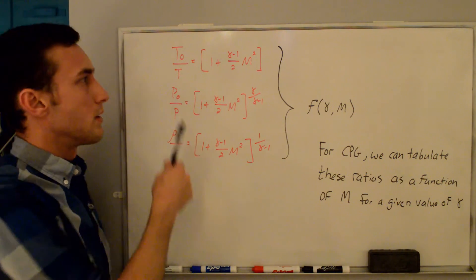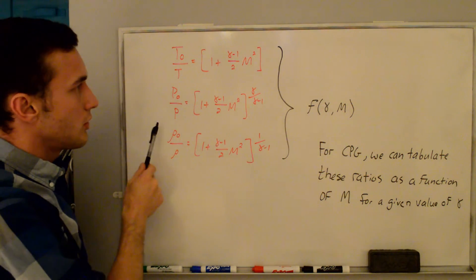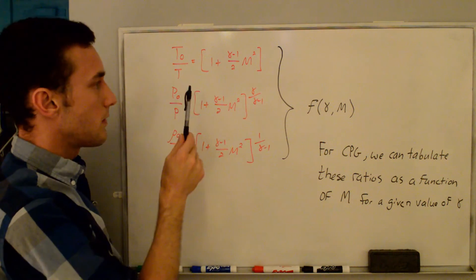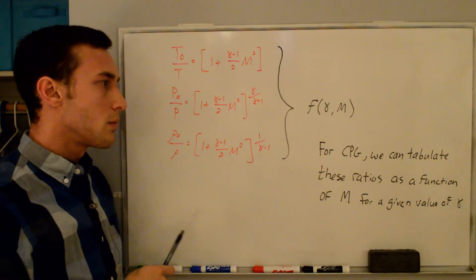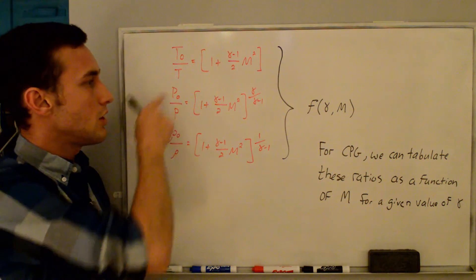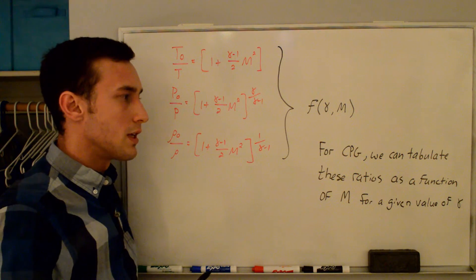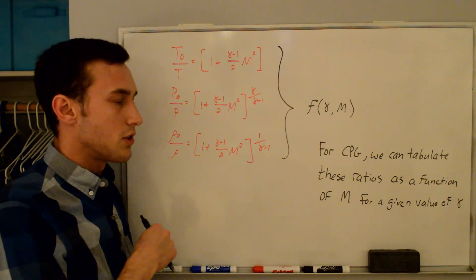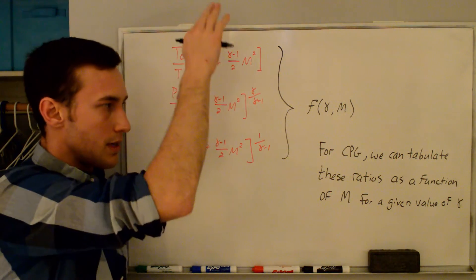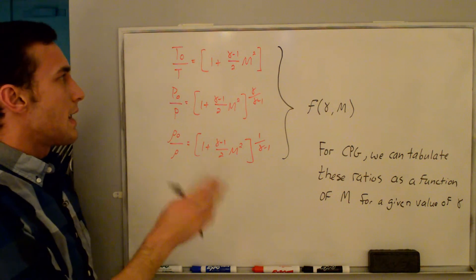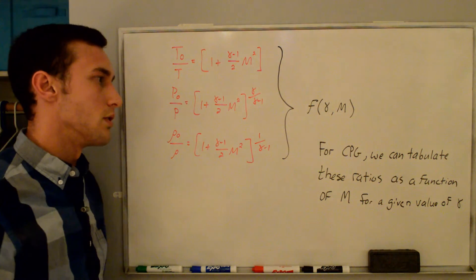All three stagnation to static ratios are now written together. Note that each of these equations is only a function of the specific heat ratio γ and the Mach number M. For a calorically perfect gas, we can tabulate these ratios as a function of Mach number for a given value of γ — usually γ = 1.4 for air. At a given Mach number, you can relate the stagnation temperature, pressure, and density to their static counterparts.